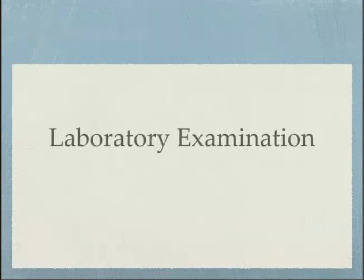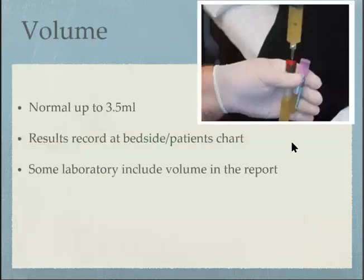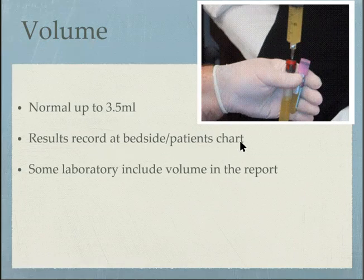For laboratory examination, there are several main aspects. Macroscopic examination includes volume, color, clarity, inclusions, and viscosity. Normally the volume is up to 3.5 mL and is usually recorded at the bedside. It is not always a standard parameter reported in the final result of synovial fluid analysis, though some laboratories do include it.